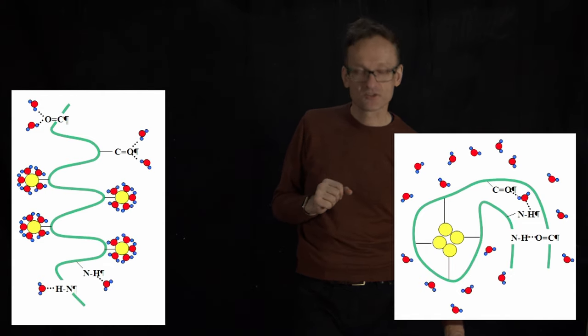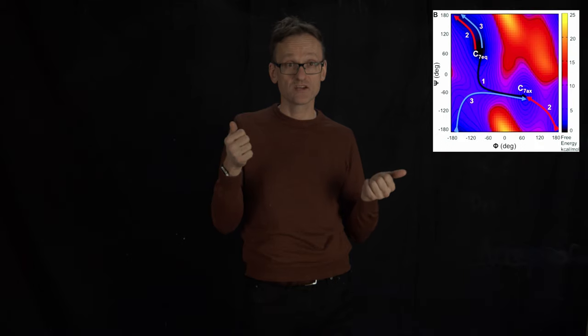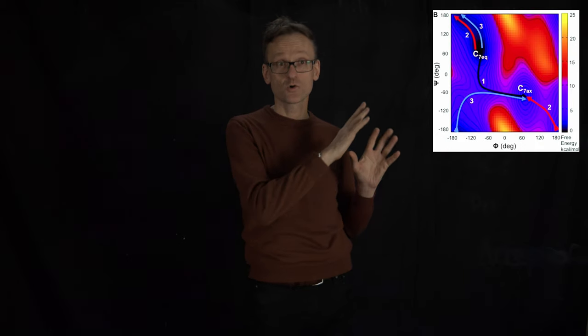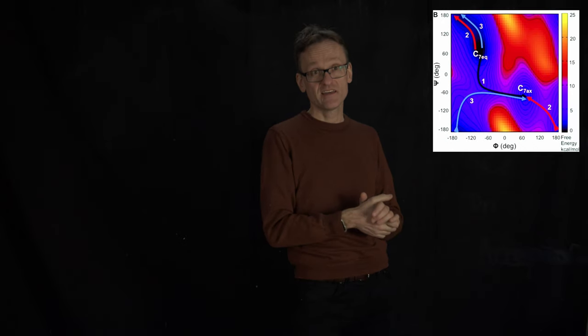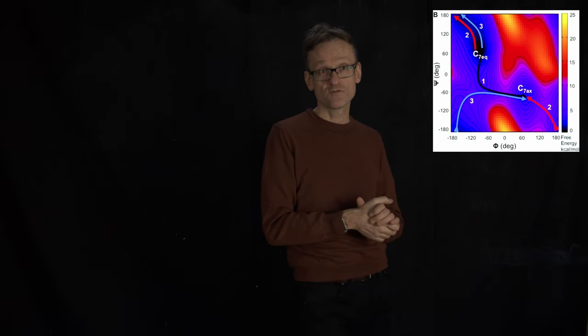That's probably all we'll say about conformations today. One final concept: assuming that for each conformation I can calculate what the energy is — whether involving hydrogen bonds or not — we could do this for the alanine dipeptide. Remember, it has just two degrees of freedom: I change the phi and psi torsions, the so-called Ramachandran torsions, and then plot in a Ramachandran diagram to get the energy as a function of those two torsions.